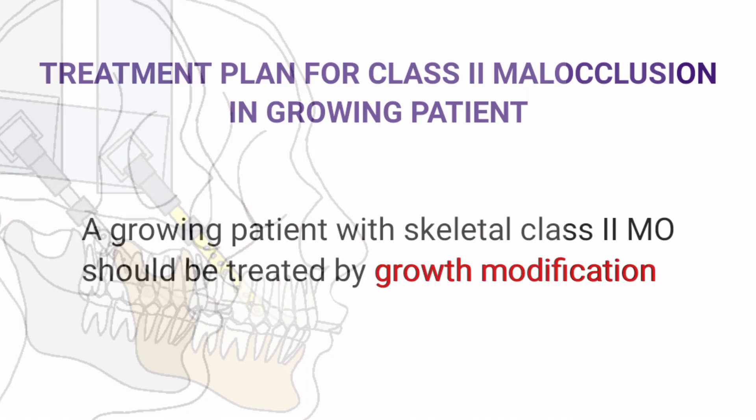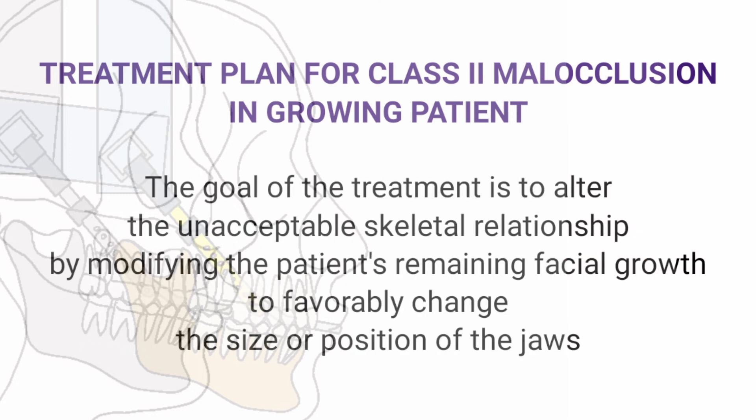Treatment Plan for Class II Occlusion in Growing Patients: A growing patient with skeletal Class II occlusion should be treated by growth modification. The goal of treatment is to alter the unacceptable skeletal relationship by modifying the patient's remaining facial growth to favourably change the size or position of the jaws.